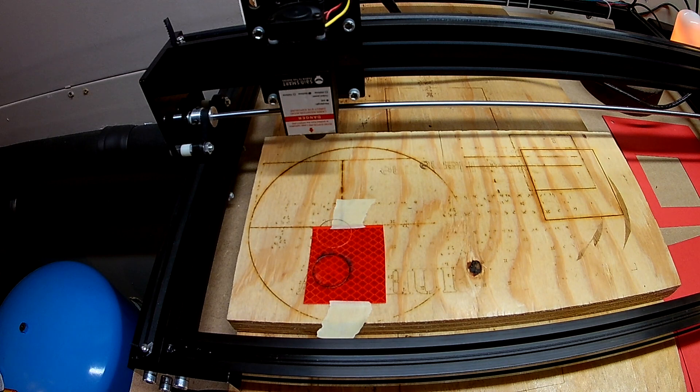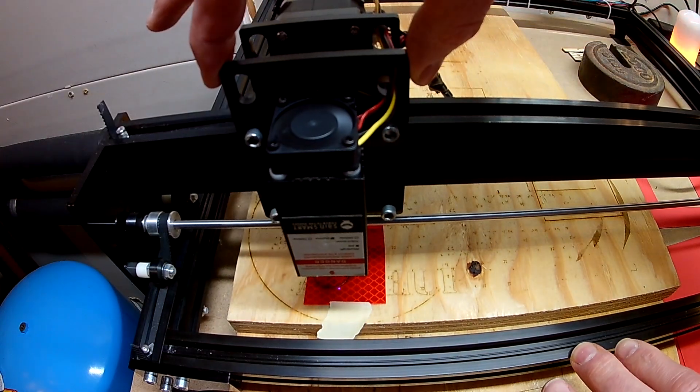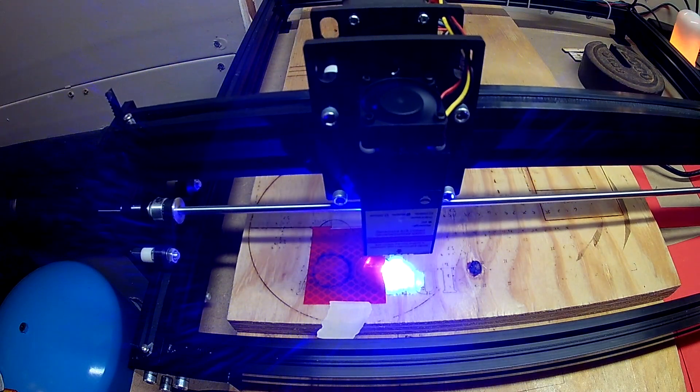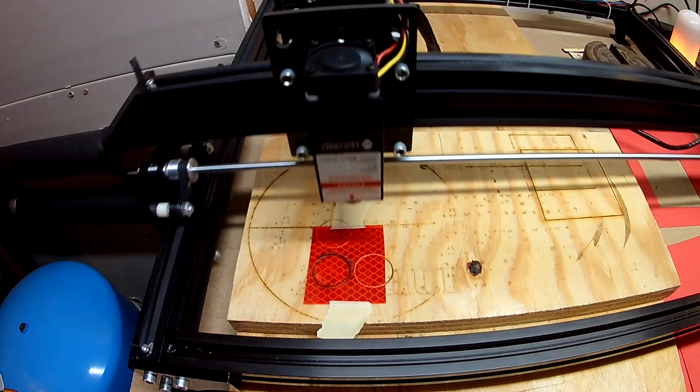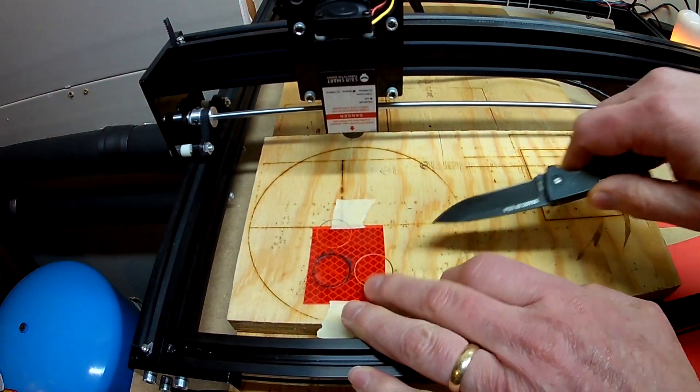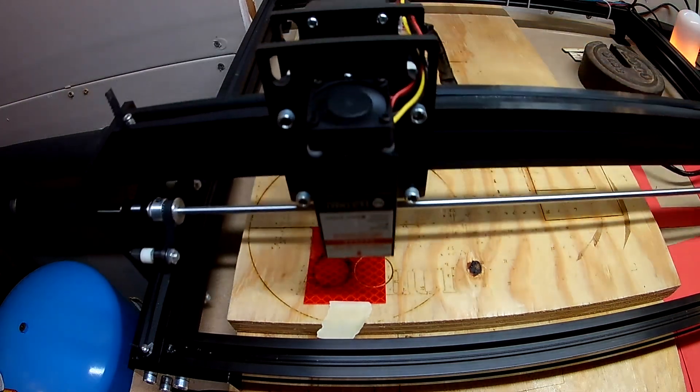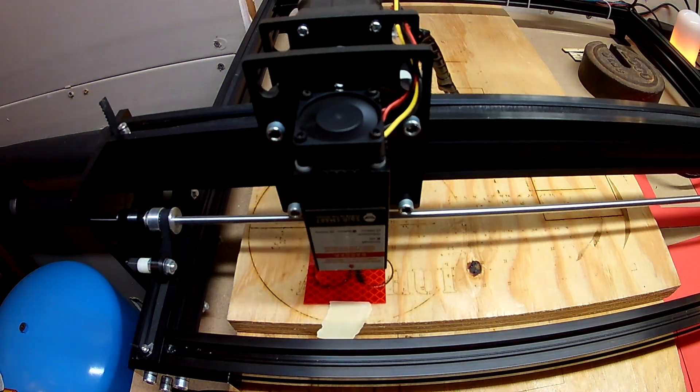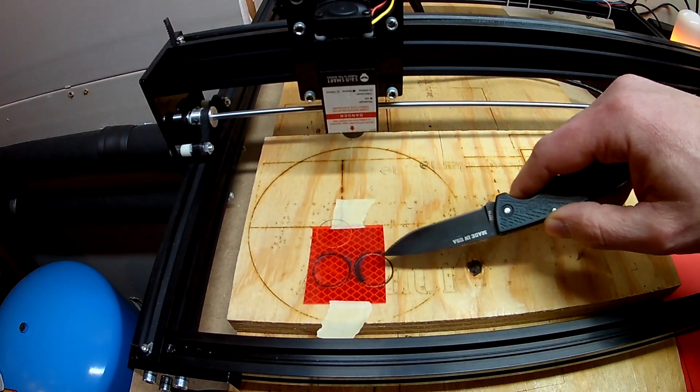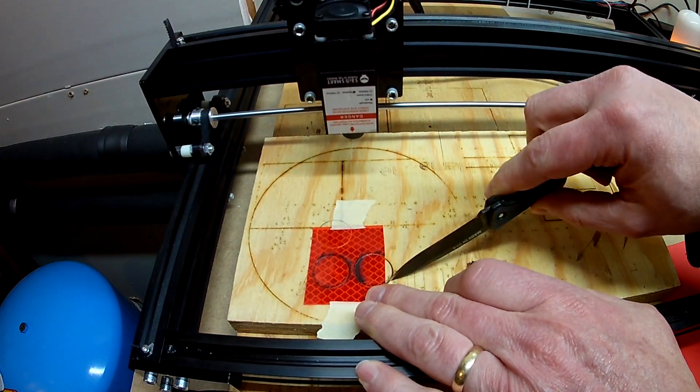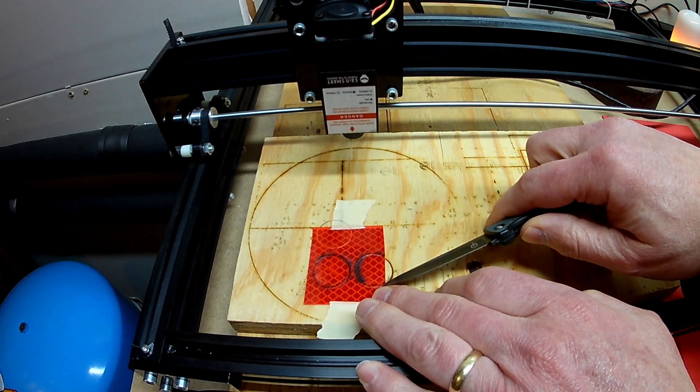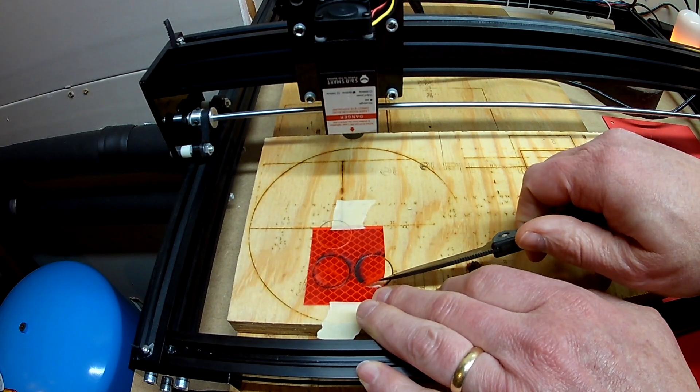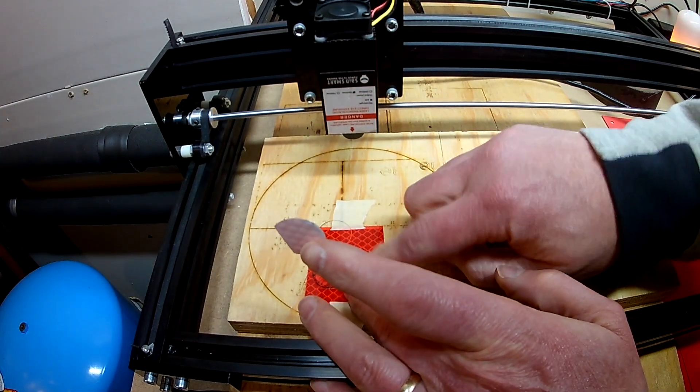We'll try a pass at 500. Nope, let's try a second pass. It's really scorching it there. It's getting through the red part, it's just not cutting all the way through. It just didn't get through the plastic backing.